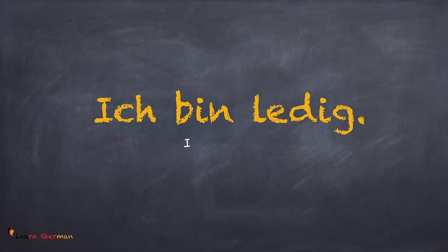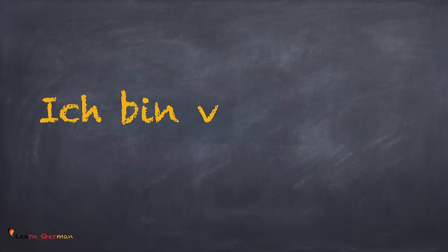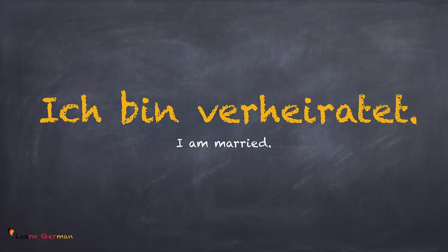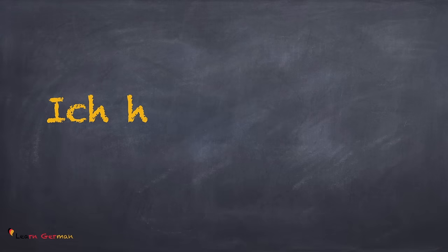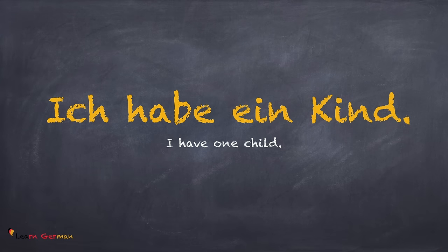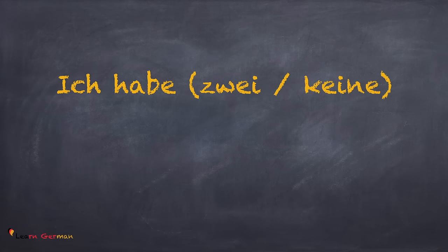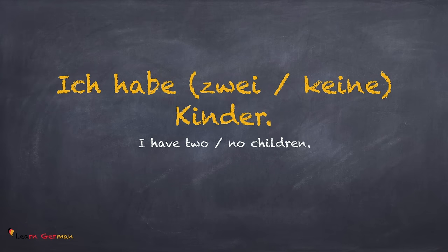Moving on to the marital status. Ich bin ledig. Or you can say Ich bin verheiratet. Ich habe ein Kind. And if you have no children or more children, you would say Ich habe zwei Kinder, oder drei Kinder, oder Ich habe keine Kinder.